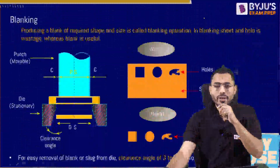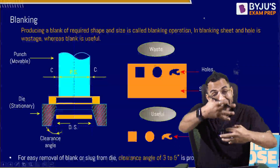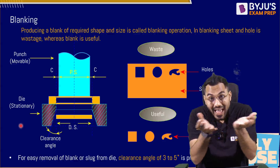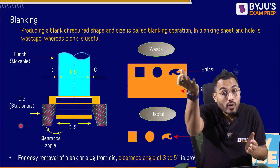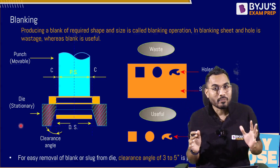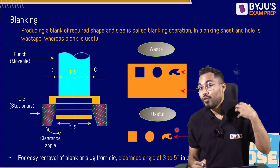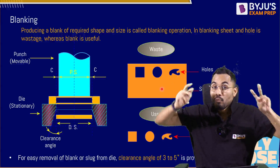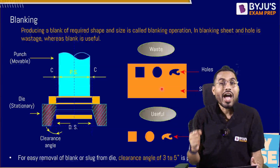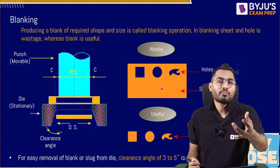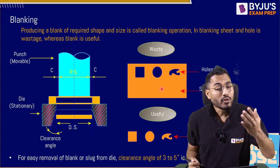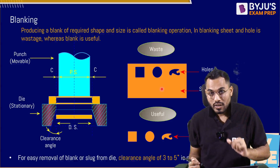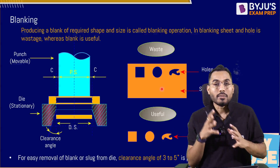What is meant by blanking operation? Blanking is exactly opposite to punching. Whenever we are interested to produce a blank of required shape and size from a given raw metal sheet, it is called blanking operation. The blank or slug is useful whereas the raw metal sheet is wastage. Both operations are performed with the same punch and die. The difference is which output product you are utilizing — if you use the hole, it is punching; if you use the blank, it is blanking.